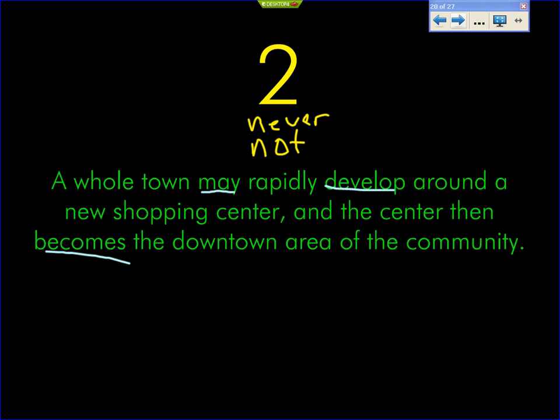We place negation between the helping verb and the main verb. 'A whole town may never develop around a new shopping center.' You wouldn't say 'may develop never.' Well, you could, but it doesn't sound quite right. Or 'never may develop.' Both of those are technically grammatically acceptable, but they're not the style that we use. We usually insert negation right between the helping verb and the main verb. So be aware of that. But in identifying, on a test or anywhere else, you do not underline that word because that is an adverb, not a verb or helping verb.